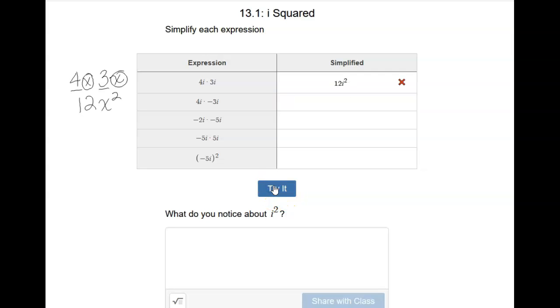Right now, it's saying that that is incorrect. We don't really want to have i squared in our answer. So what we're going to do is remember that i is the same thing as the square root of negative 1.